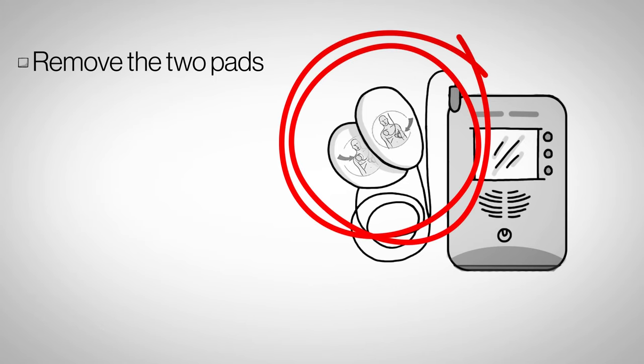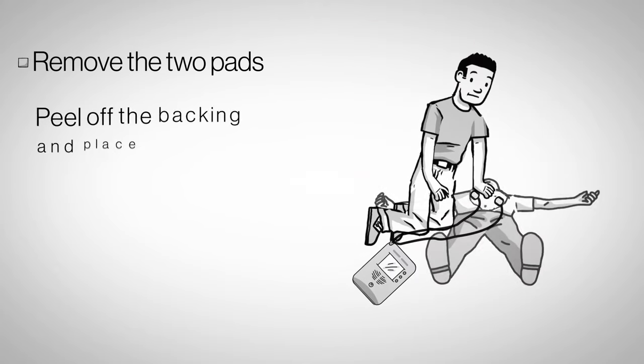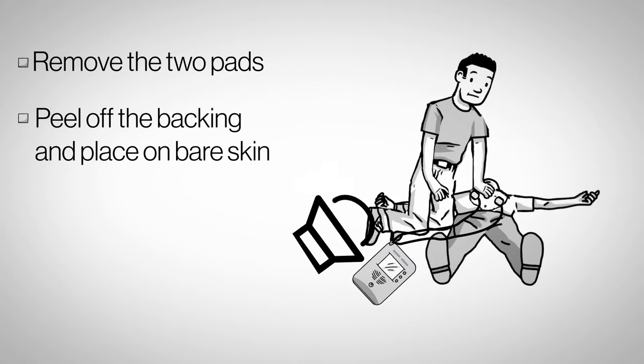Remove the two pads that are attached to the AED. They look like stickers with wires. Pictures on the pads show you where to place them. Peel off the backing and stick the pads directly on the person's skin.